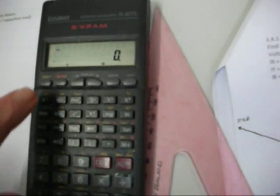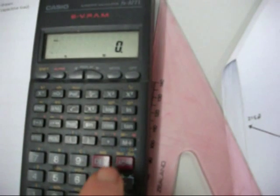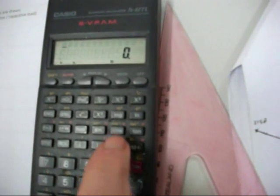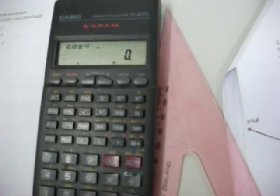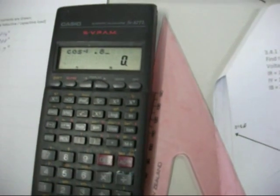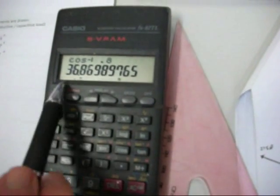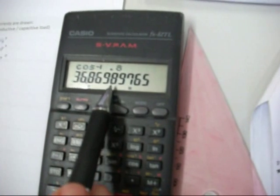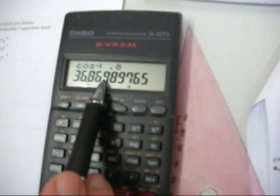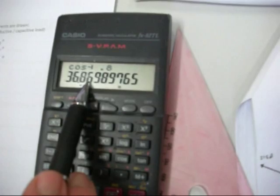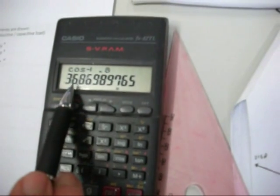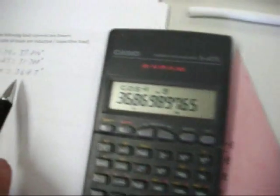And 0.8. Shift, cos, 0.8 equals 36.8698. We need to round that number up which turns that into a 10, which is going to turn that into a 7. So 36.87 degrees for blue.